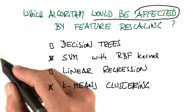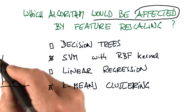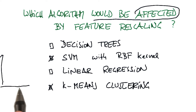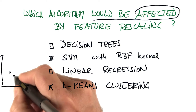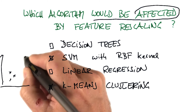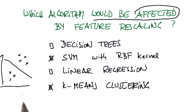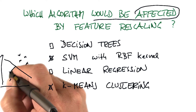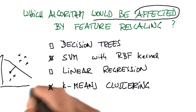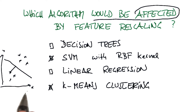Both in support vector machines and k-means clustering, you're really trading off one dimension to the other when you calculate the distance. Take, for example, support vector machines. When you look at the separation line that maximizes the distance, you calculate the distance, and that distance calculation trades off one dimension against the other. So if you make one twice as big as the other, it counts for twice as much.